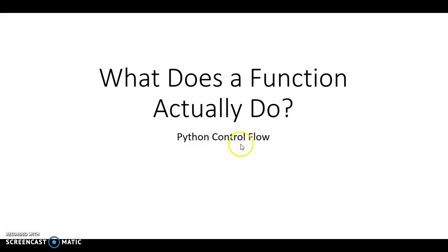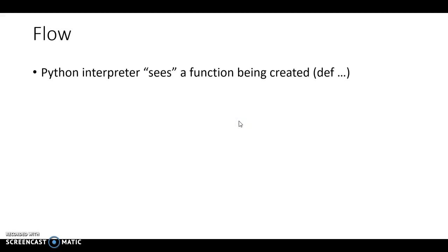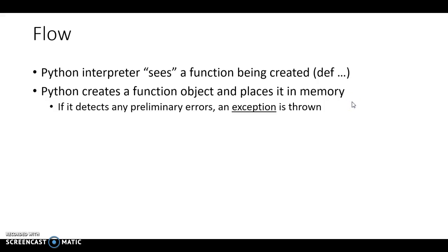We call this the control flow — basically, what's the procedure the computer executes? As a quick background: the first thing that happens is you create your function, and then the Python interpreter sees the function being created because of the line that starts with 'def'. So if it sees 'def', it realizes that a function is being defined. Python then creates what's called a function object and places it in memory.